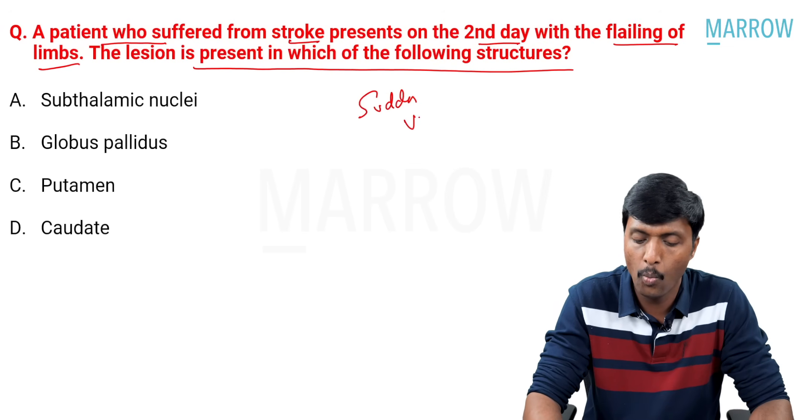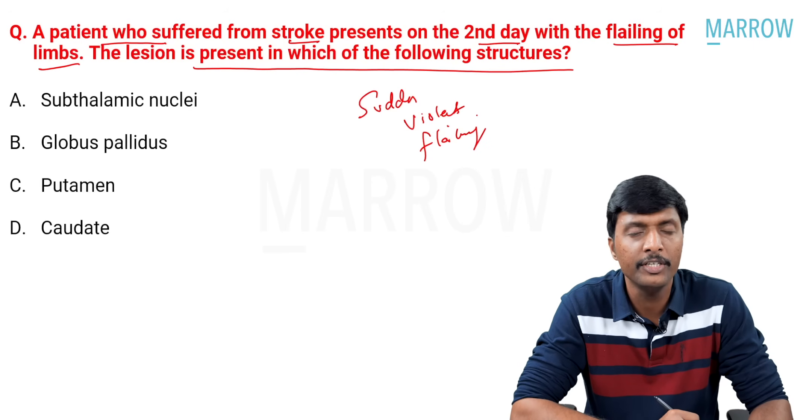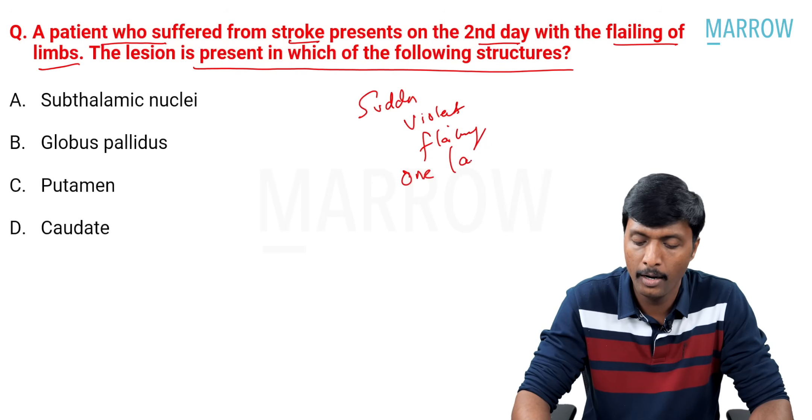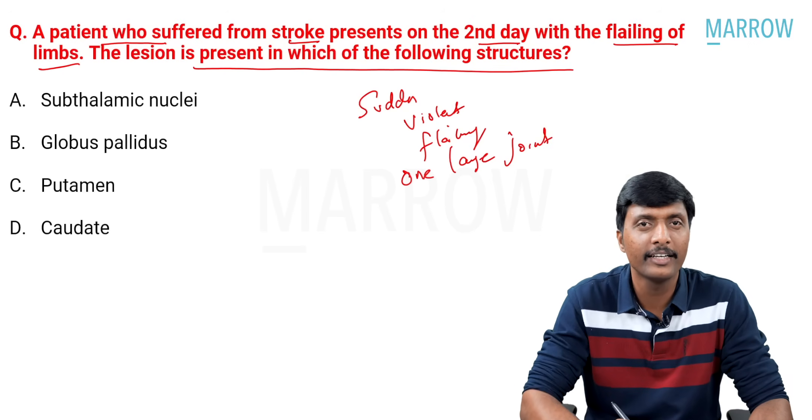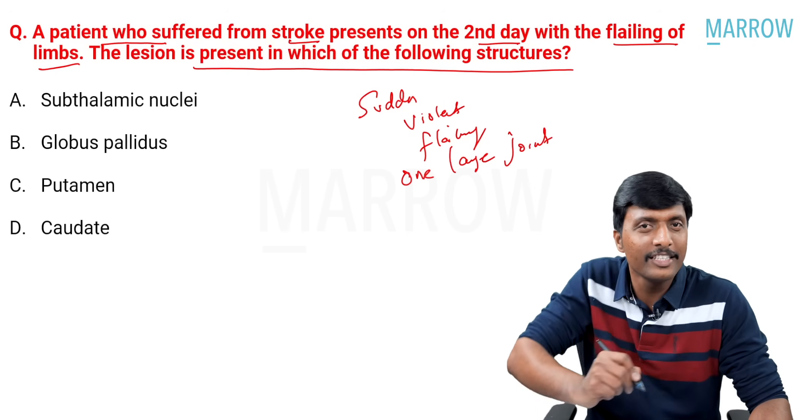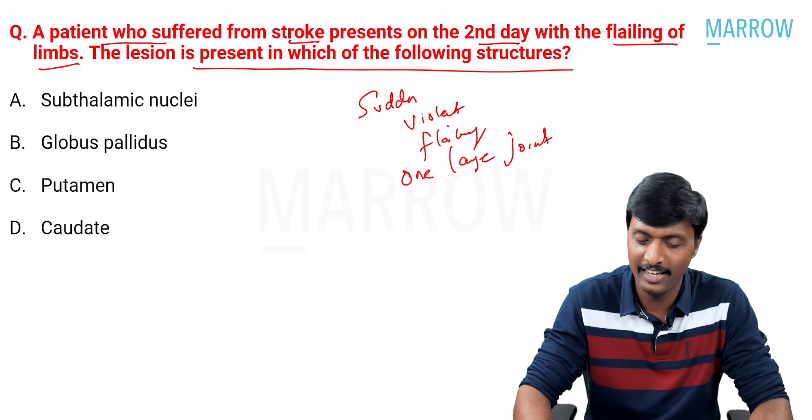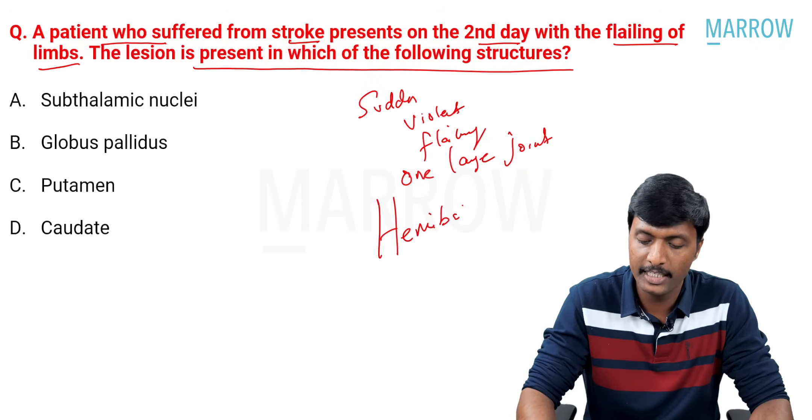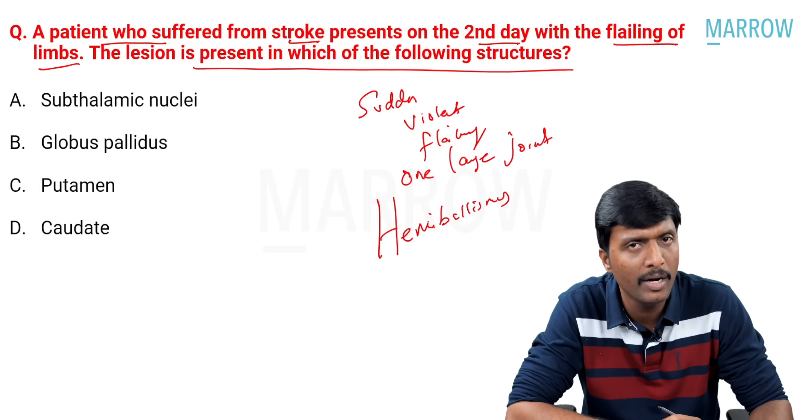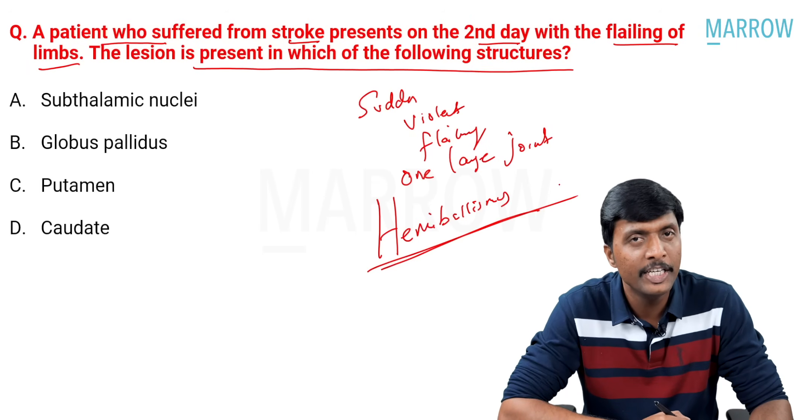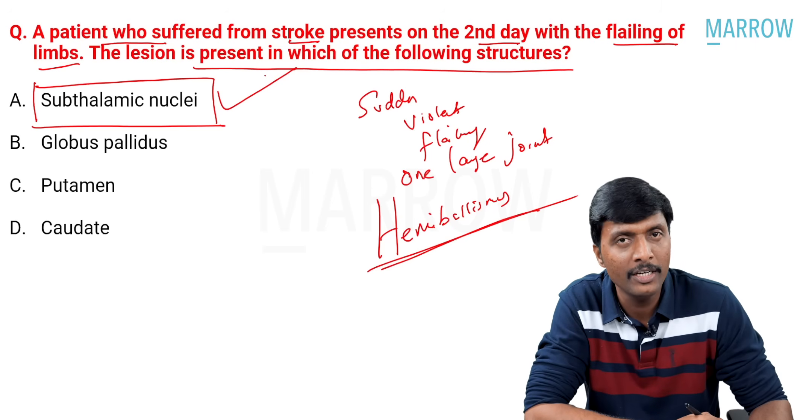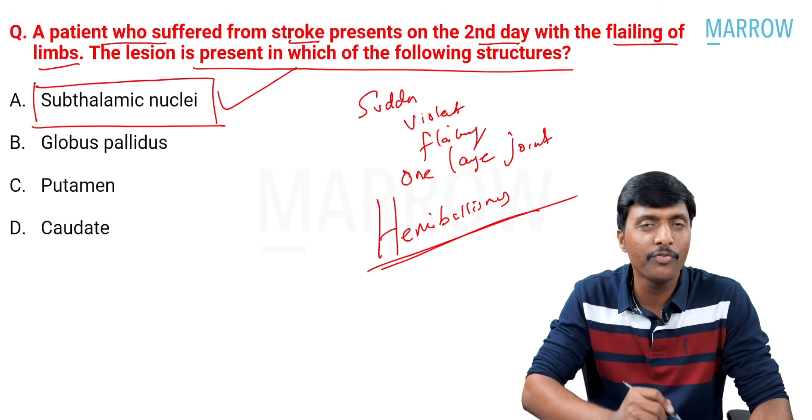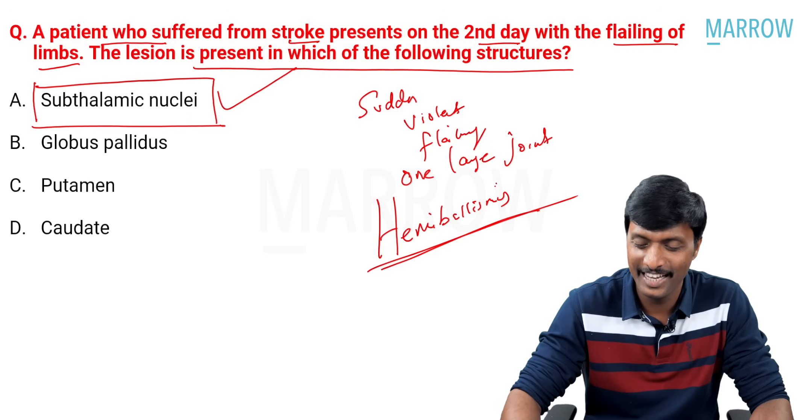Very important guys. Sudden violent flailing type of muscle contraction involving one large joint. Sudden contraction. Sudden violent contraction of one large joint. What is this called as a sudden flailing contraction? Hemiballismus. Hemiballismus. It's a type of involuntary movement. Basal ganglia is affected. Lesion typically in subthalamic nucleus. Subthalamic nuclear lesion causes sudden violent contraction of one large joint, which we call as hemiballismus.